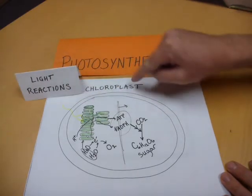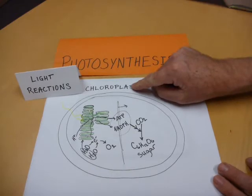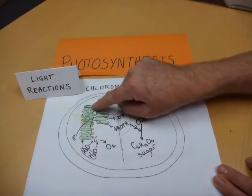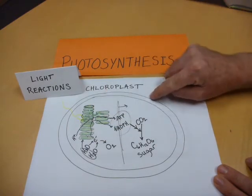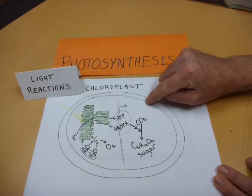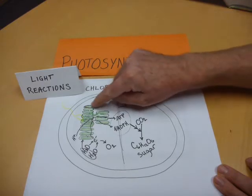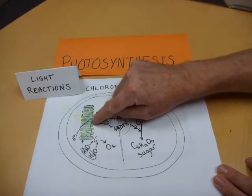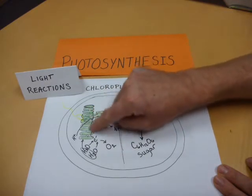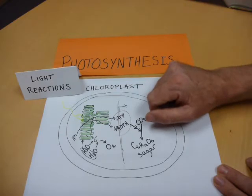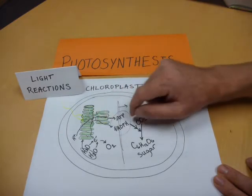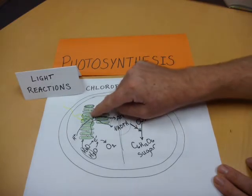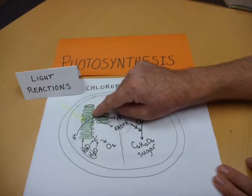They occur in the chloroplast, in these thylakoid membranes. Notice that this chloroplast has three sets of membranes: an outer one, an inner one, and then all these membranes stacked up in these things called grana — these are the thylakoid membranes. That's what's colored green. That's where all your chlorophyll is.